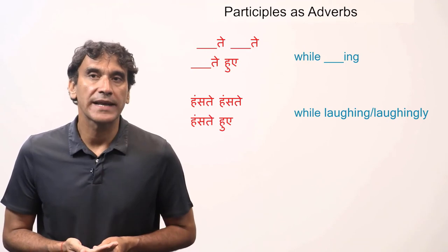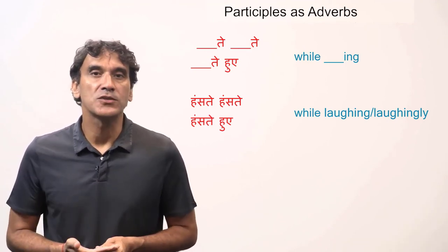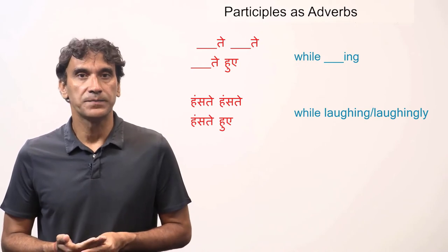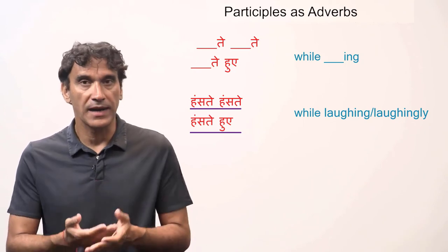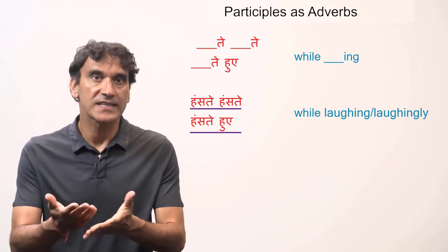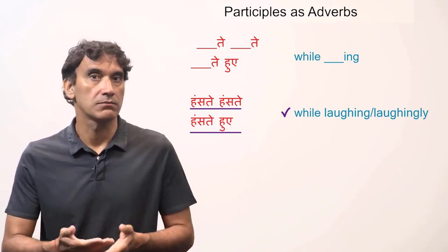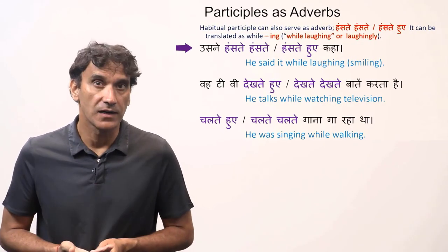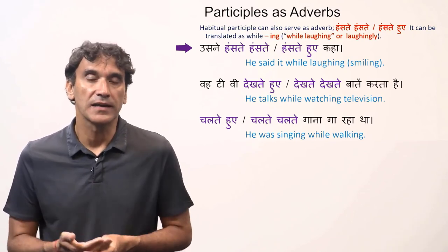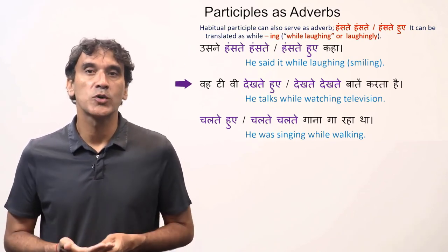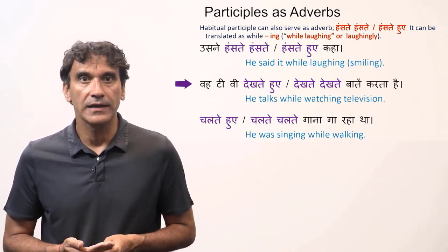The habitual participle can also serve as an adverb. The masculine plural form is used in the function of an adverb, and there are two equivalent forms. For example, 'haste haste' or 'haste hui' both mean 'while laughing' or 'laughingly'. 'Usne haste haste kaha' and 'usne haste hui kaha' both mean 'he said it while laughing'. 'Woh TV dekhte hui baatein karta hai' and 'woh TV dekhte dekhte baatein karta hai' both mean 'he talks while watching television'.